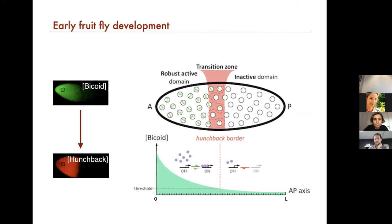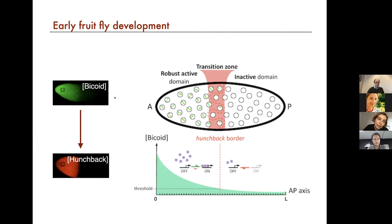Bicoid is one of the early morphogens that controls a bunch of other genes. The first one it starts to control early on is called hunchback. Hunchback is expressed in the first part of the embryo, the anterior end, and is not expressed in the posterior. Although the bicoid gradient decays exponentially, the hunchback boundary is very sharp. So you get something very sharp from something not sharp at all — that is why physicists have been really intrigued by that.